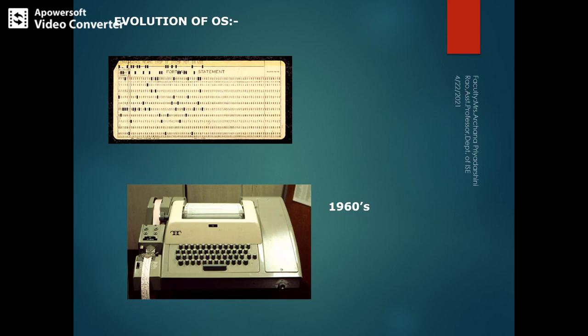The features of the second generation compared to the first: the first generation used vacuum tubes, but the second generation used transistors. These transistors were reliable, smaller in size, generated less heat, consumed less electricity, and were faster than the first generation. Machine level languages were used in the first generation, but the second generation used assembly level languages and high-level programming languages. Some computers of this generation include IBM 1620 and CDC 1604.